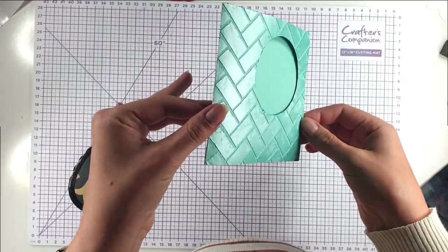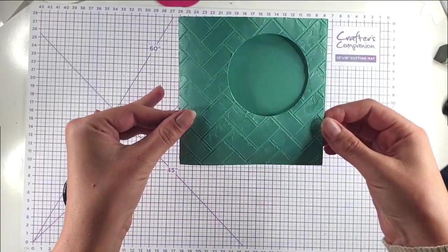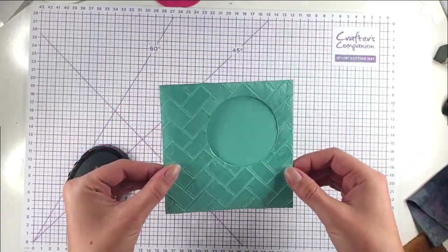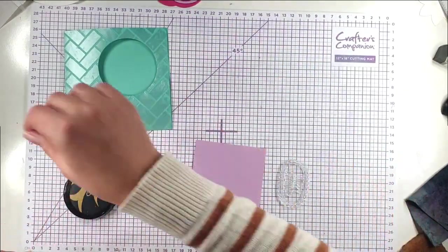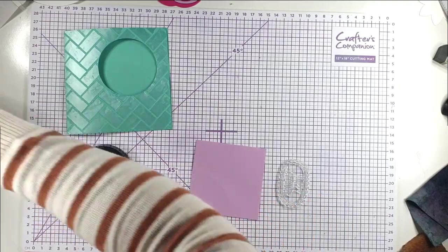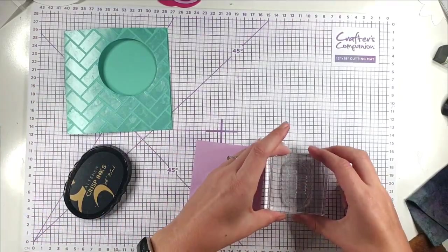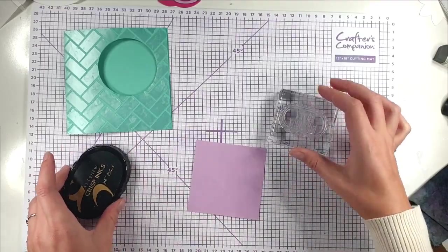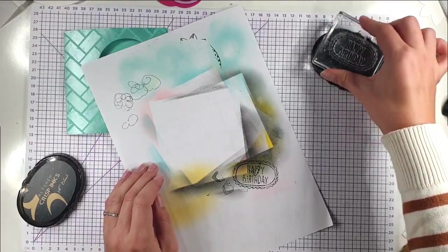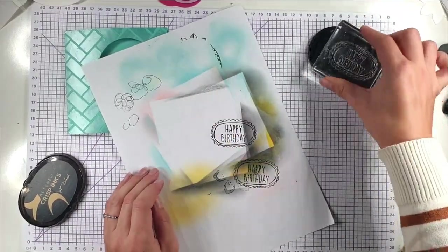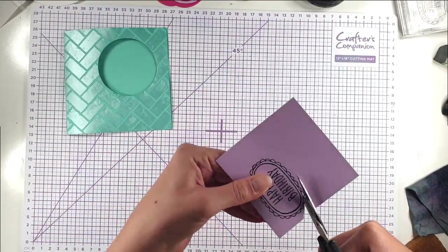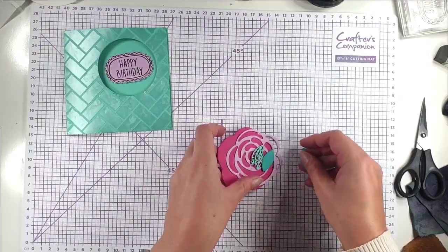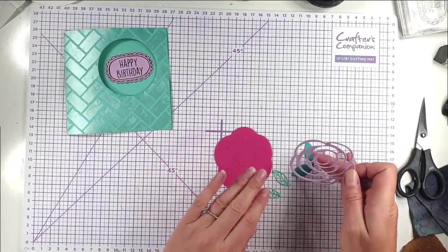Now that our card front is dry, you can see it adds that lovely shine texture to the card front. I'm going to finish off the card. I've got a piece of Fresh Freesia cardstock from Stampin' Up. I've got the Happy Birthday sentiment from the stamp set. I'm going to stamp that a few times onto scrap paper to prep it first. Then I'm using my scissors to cut that out.